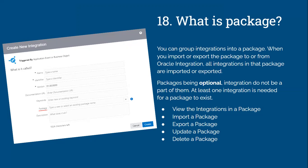When you are creating an integration, you'll see a form where you give the integration name, identifier, and version, and below that you can see a package field — this is optional. You can assign a package if you want, or leave it blank. Packages are optional, and at least one integration is needed for a package to exist.